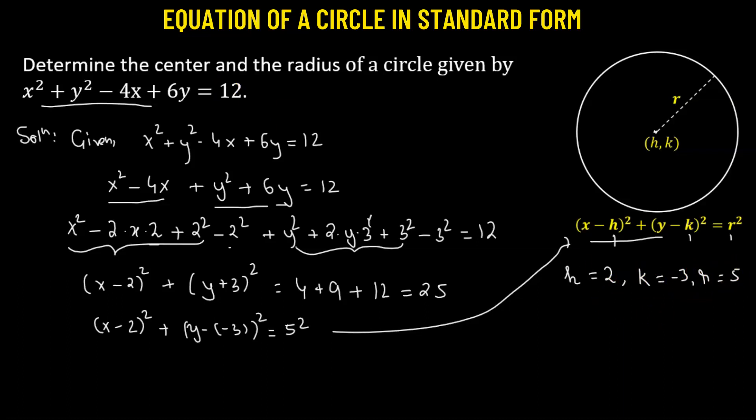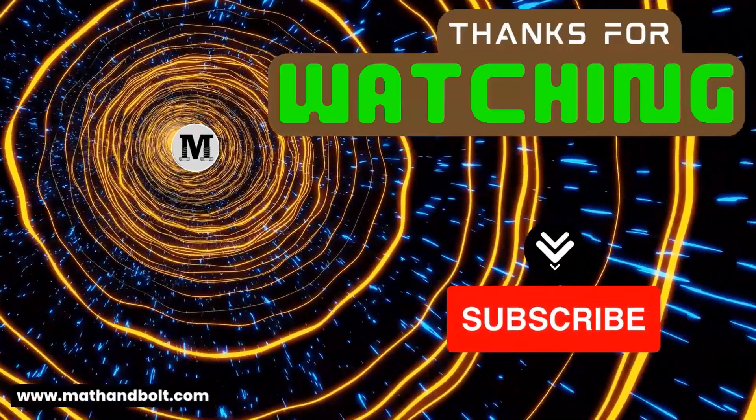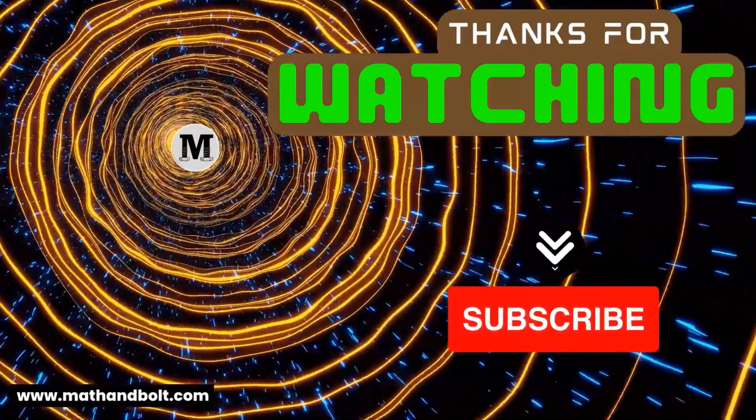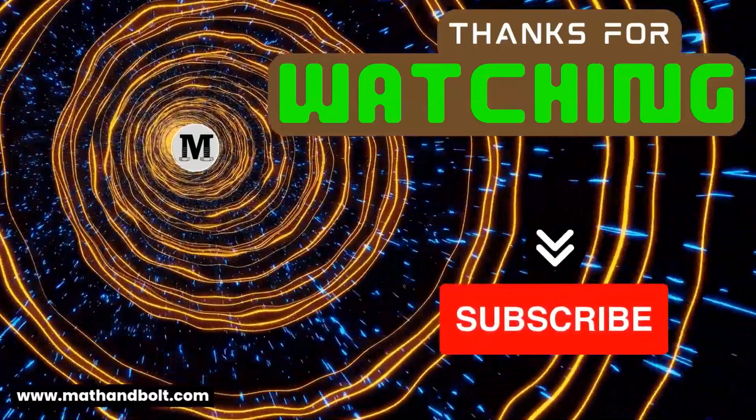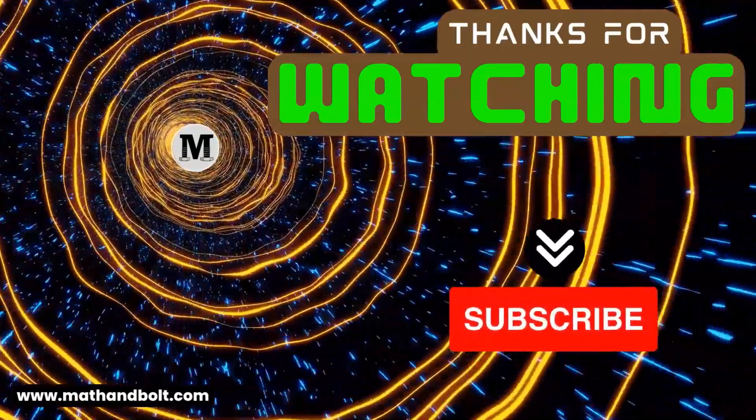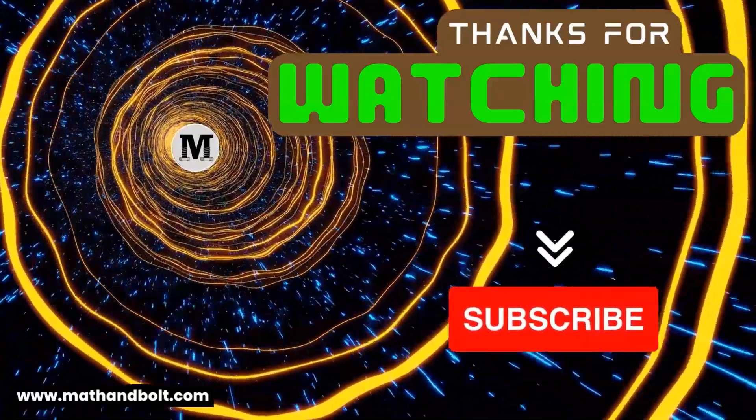That means we now have the center. The center will be given by the coordinate (h, k), so our center of the circle is (2, negative 3). And the radius, we have found out the value of the radius as well. So r is 5.